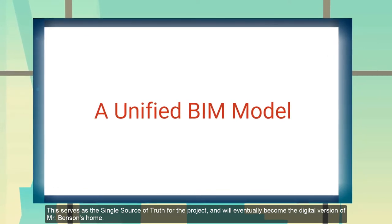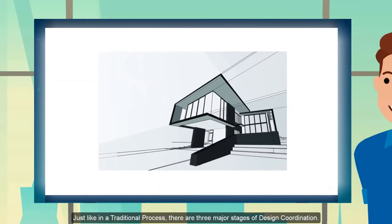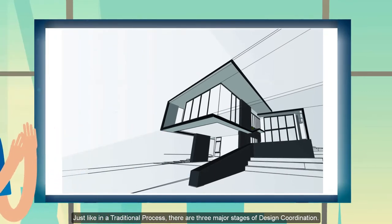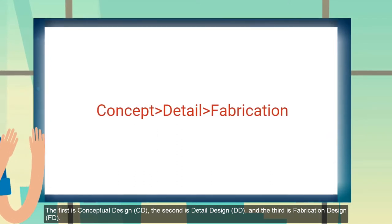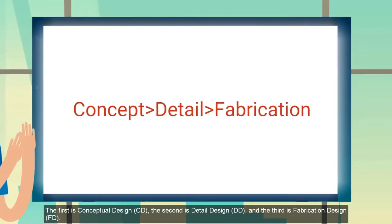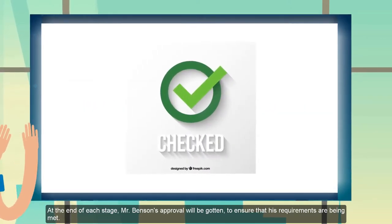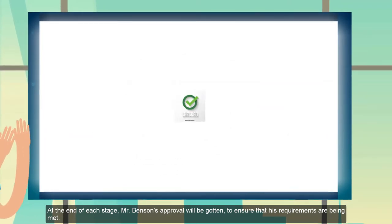This will also serve as a digital version of Mr. Benson's home eventually. Just like the traditional process, there are three major stages in the design process. The first one is the conceptual schematic design, the second one is the detailed design, and the final one is the prefabrication detail for the fabrication design. And at every stage of this design process, a client approval is gotten to ensure that his requirements are being met.